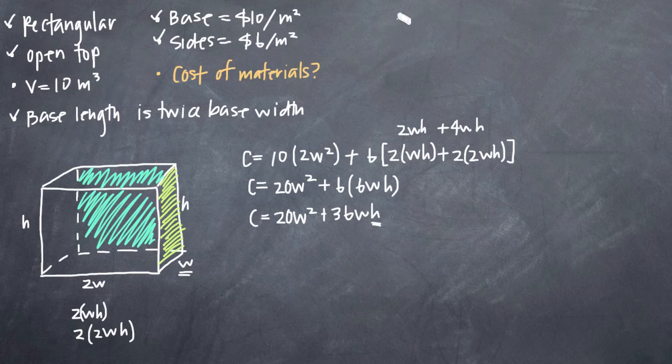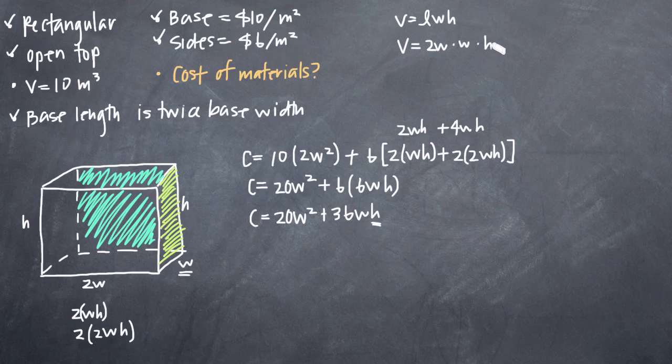We know that the volume of this box is equal to the length times the width times the height. We know that our length is equal to 2w. We know that the width is equal to w and we know that the height is equal to h. We also know that our volume is equal to 10. So we can set that equal to 10, solve for h and then plug in what we get to our cost function.